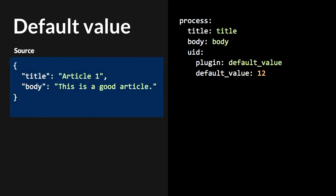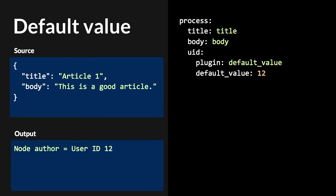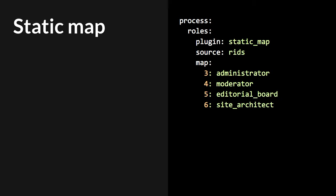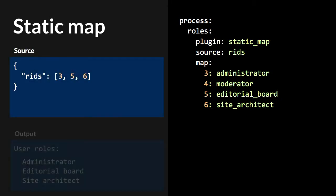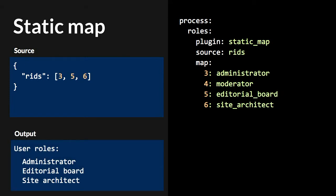In some cases the values you are getting are not available in the source, and you can use default values. In this example, we are setting the node author to UID 12 for all the articles because it's not something you can get from the source. Static map is another good tool — it allows you to create a one-to-one mapping from one set of data to another. Like in Drupal 7, user role is stored as a role ID, and you can do a mapping for that in Drupal 8.